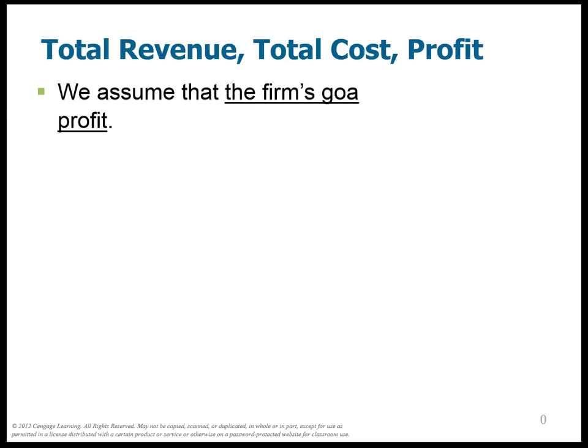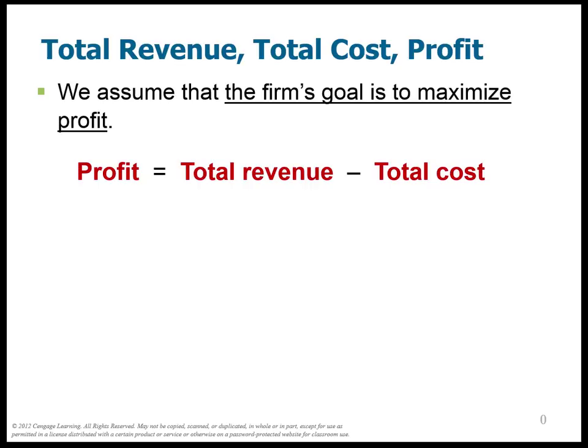First of all, we assume that the firm's goal is always to maximize their profit. That's the way that we arrive at our equilibrium ideas — we know the firm always wants to maximize profit. What is this profit? It's total revenue minus the total cost. Revenue is the amount of money that they get from sales — that's P times Q — minus the total cost. We're going to talk about the costs in more detail in this chapter.